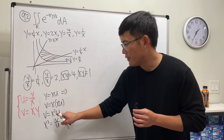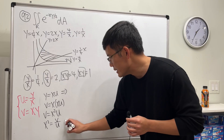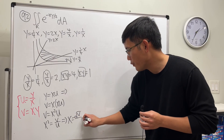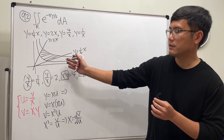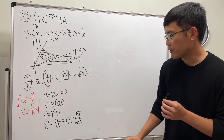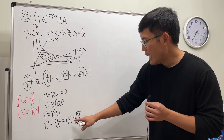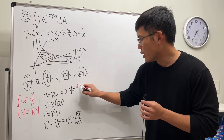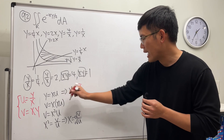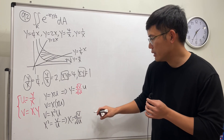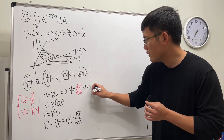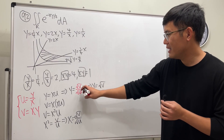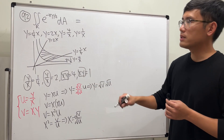Dividing both sides by u, we get x² = v/u, so x = √(v/u) — everything is positive so we don't need to worry about the domain. Then y = xu = √(v/u) · u, which simplifies to y = √(vu), i.e., y = √(v)·√(u).